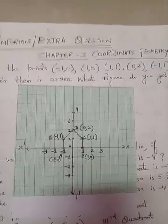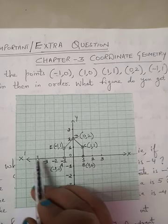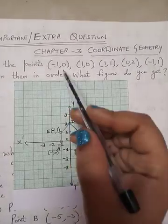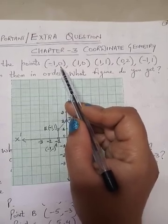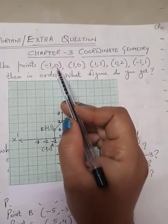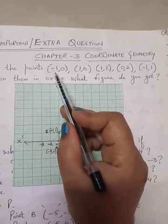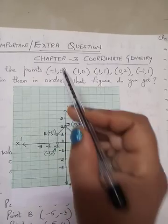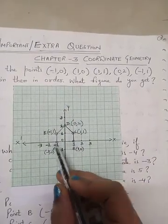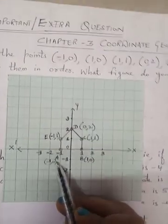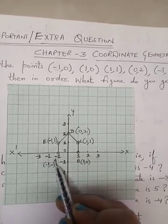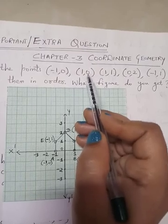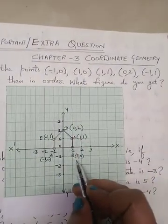We draw the two perpendicular lines, the x-axis and the y-axis. We have to plot (-1, 0). Since the y-coordinate is 0, this point will lie on the x-axis. So on the x-axis, (-1, 0) — this is point A. For (1, 0), the y-coordinate is again 0, so it will lie on the x-axis. This is point B.